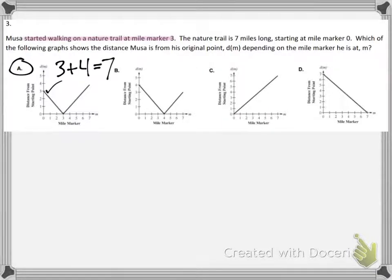So basically, if you can think about it, he's starting at mile marker 3 and then you can see he ends at mile marker 4. Well, 4 plus 3, that's 7. And the nature trail is 7 miles long. So that's one of the other reasons why it's choice A.